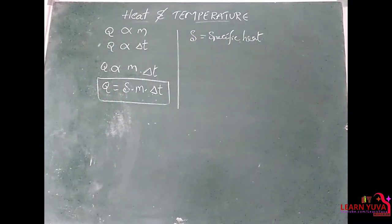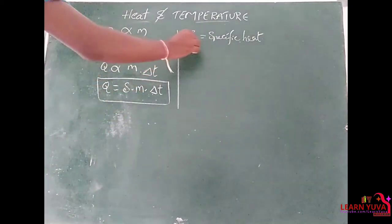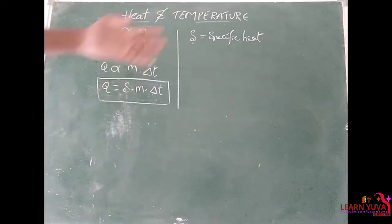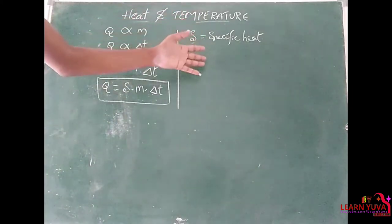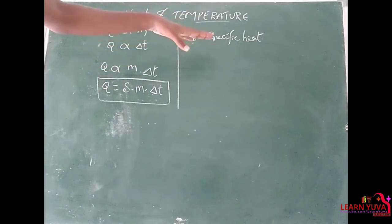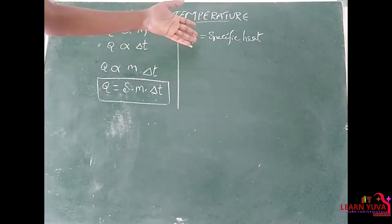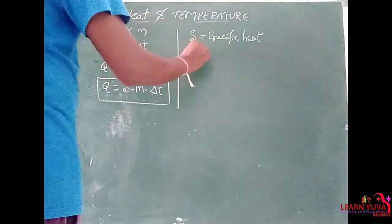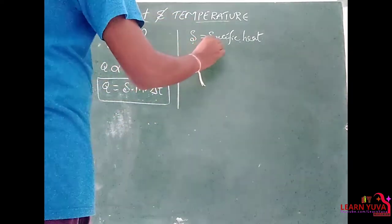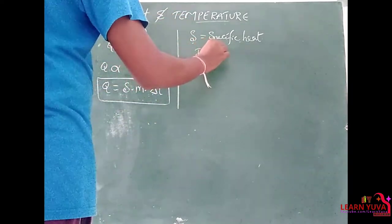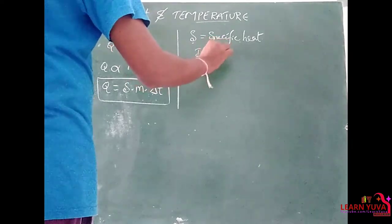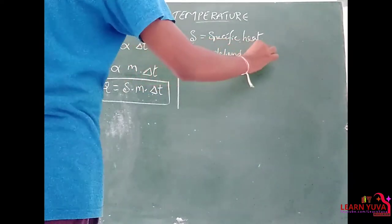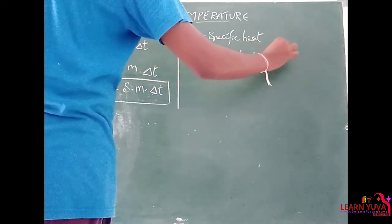S is the specific heat. Specific heat varies from body to body, and it mainly depends upon the nature of the material.